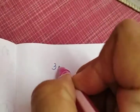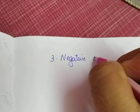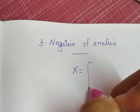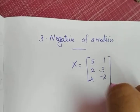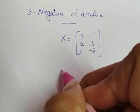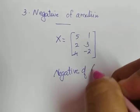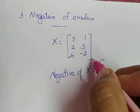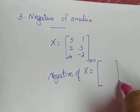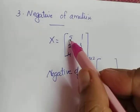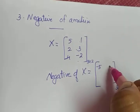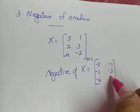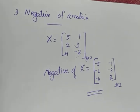The next operation is the negative of a matrix. There is no condition on the order — the matrix can be of any order. Taking matrix X equals [5, 1; 2, 3; 4, −2], which is a 3 by 2 matrix, the negative of X is found by changing the sign of each and every element. So negative X equals [−5, −1; −2, −3; −4, 2]. Note that −2 becomes positive 2 when the sign is changed.